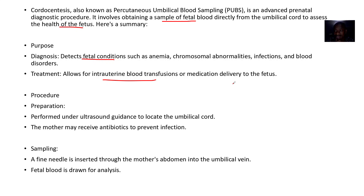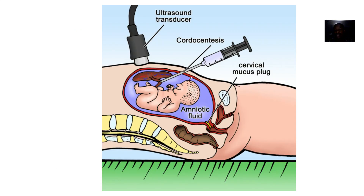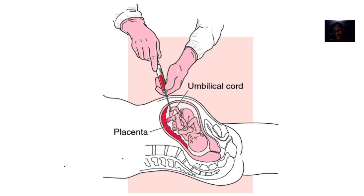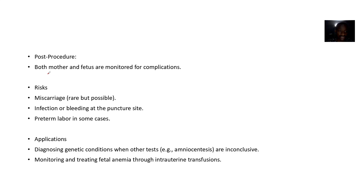The procedure is performed under ultrasound guidance — as you insert the needle, ultrasound is used so you can see it on the screen and avoid mistakes. The mother may receive antibiotics to prevent infection. A fine needle is inserted through the mother's abdomen into the umbilical vein. Fetal blood is then drawn and sent to the lab for analysis.